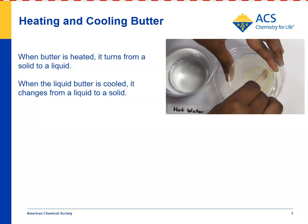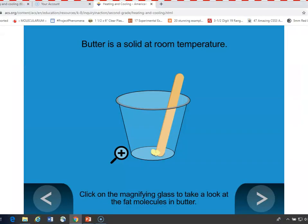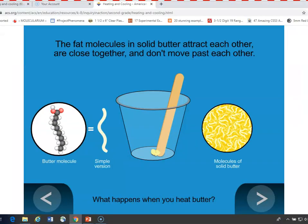The whole idea of this investigation is to show that heating and cooling can make a solid turn to liquid, and make a liquid turn to a solid. You can show an animation to help students understand what's happening on the molecular level. Here is some butter in a cup — we're going to look all the way down to the molecular level. The butter molecule is kind of long and thin, made up of carbons and hydrogens and a couple of oxygens on the end.